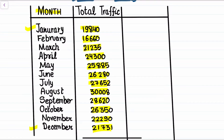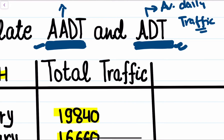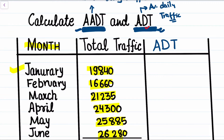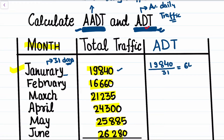Now what we have to do is find out the Average Annual Daily Traffic, that is AADT, and Average Daily Traffic, that is ADT. Let us first find out the ADT — the Average Daily Traffic. For the month of January, the traffic volume recorded was 19,840 PCU. Since January has 31 days, we divide the traffic volume for January by 31, and from that we get the ADT value for the respective month.